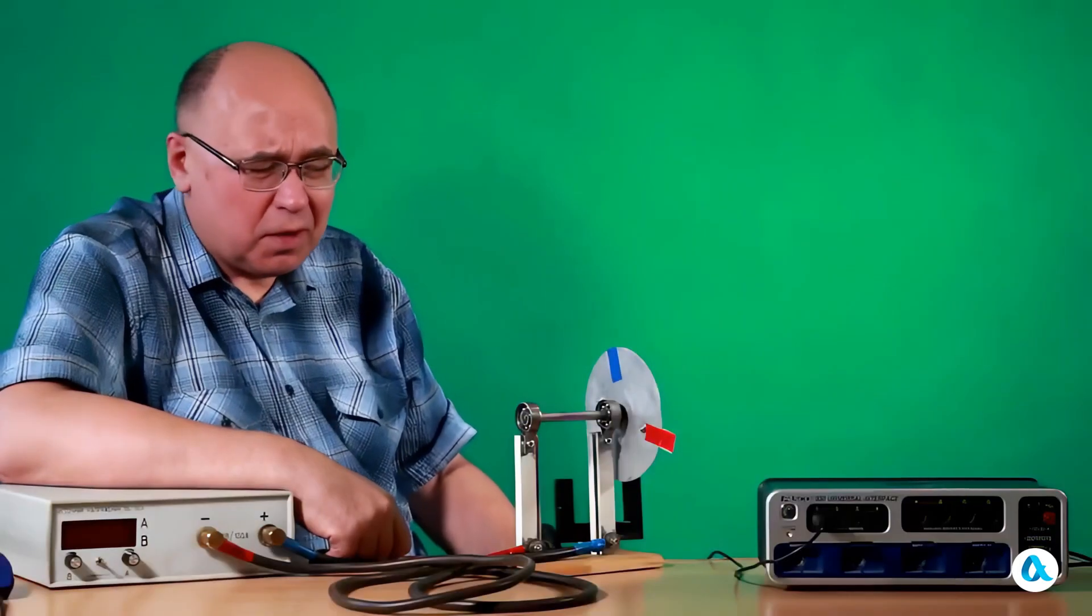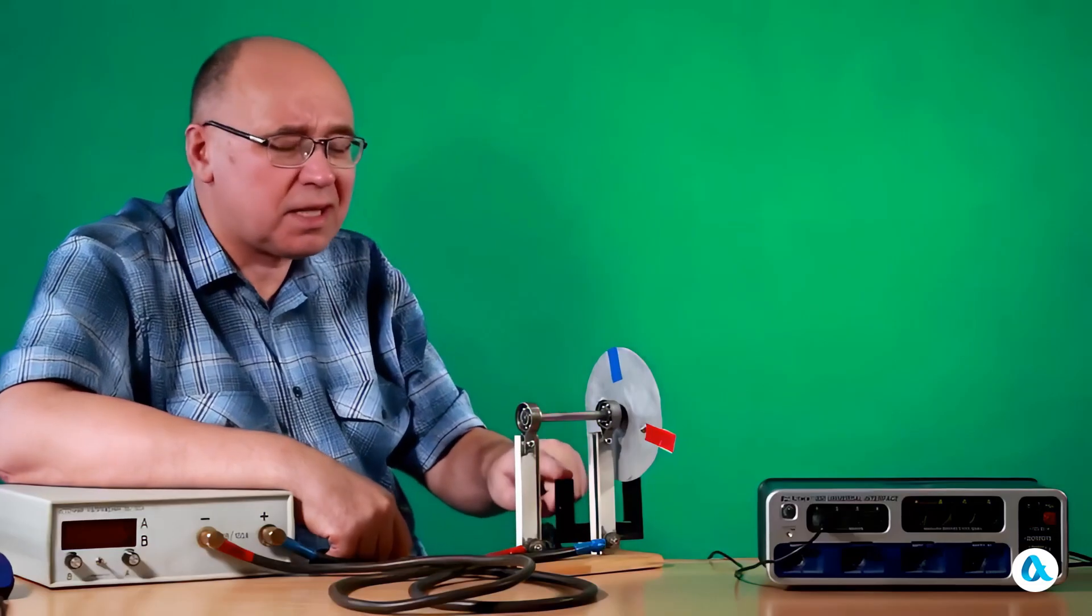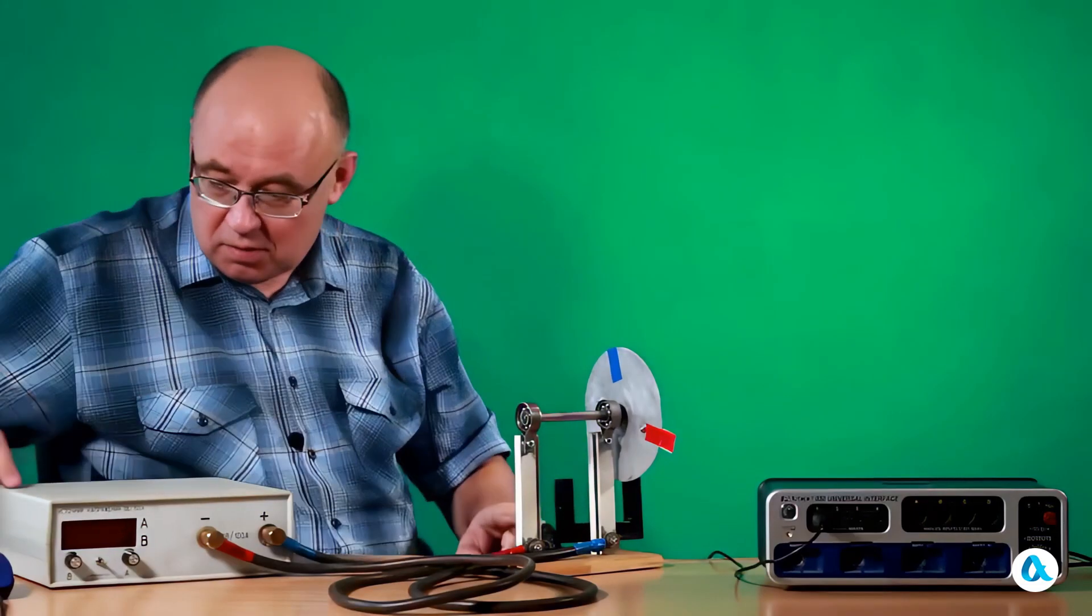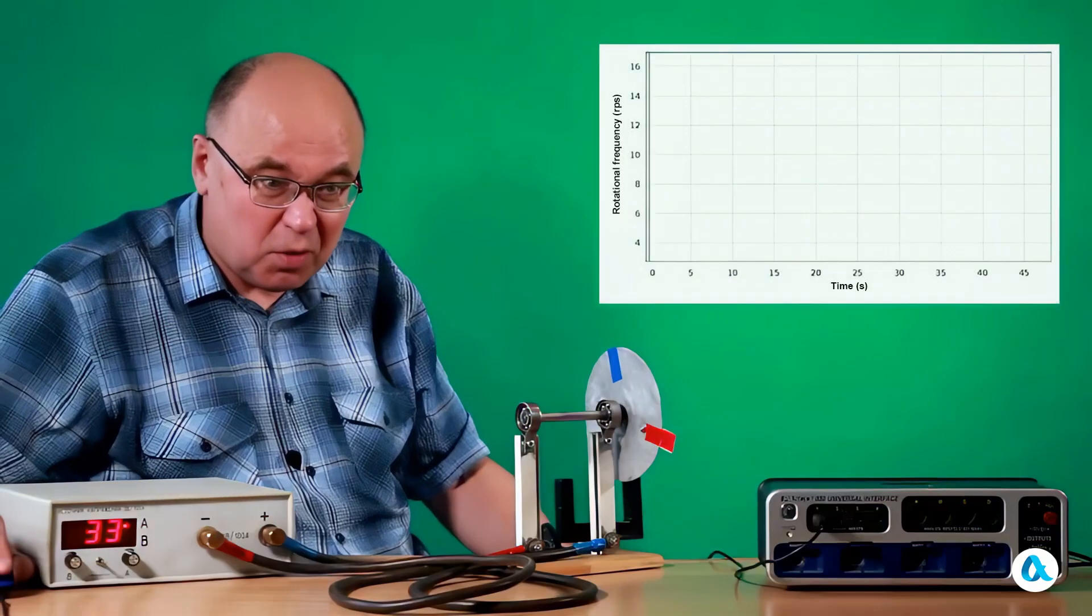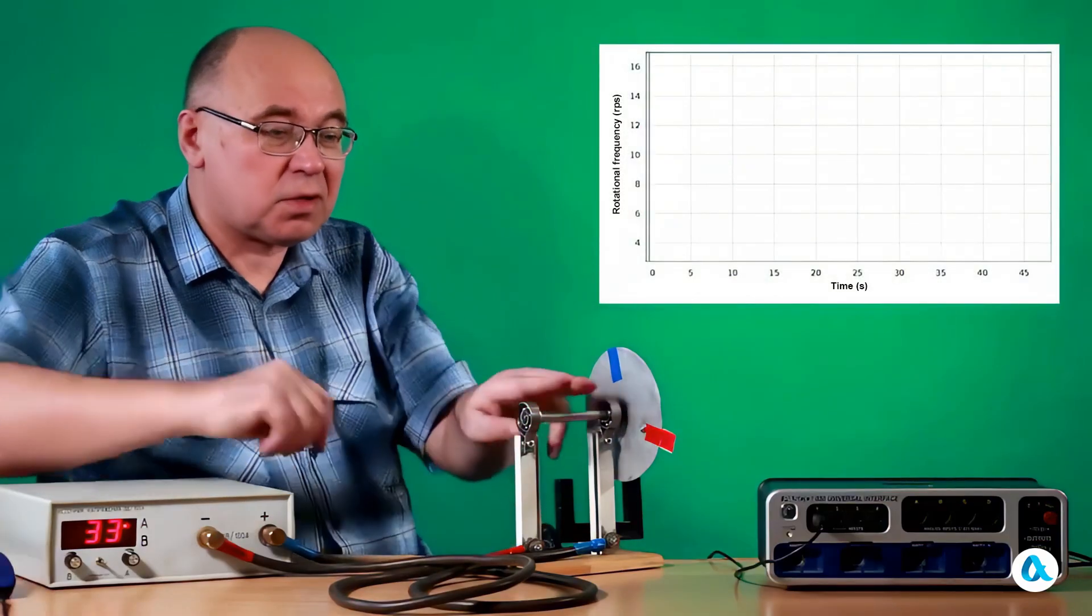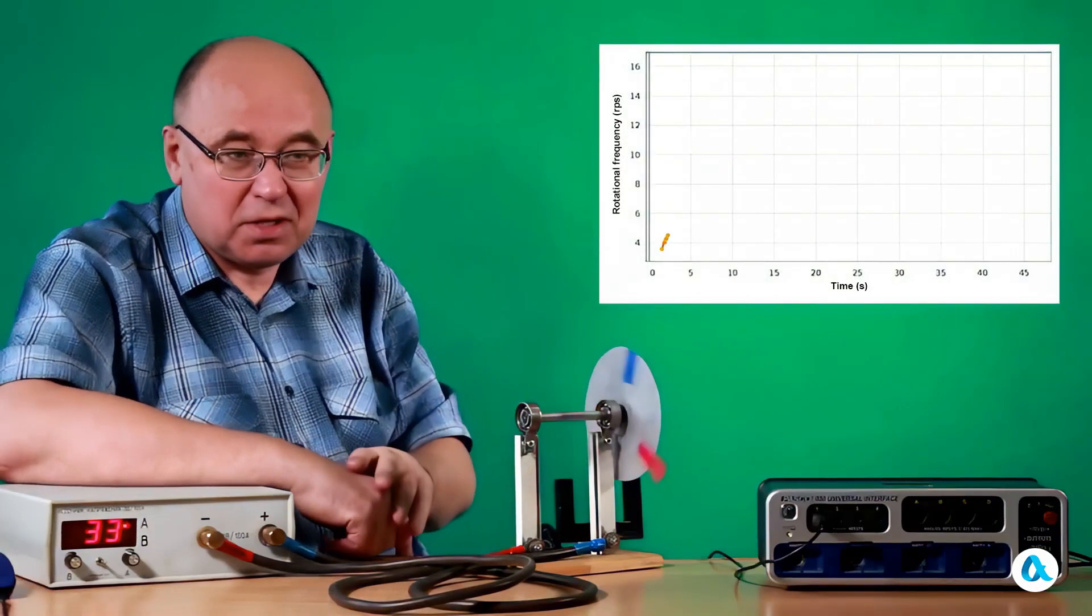And to understand it, let's take a look at how our motor accelerates. To record the characteristics of our motor, we installed a photogate on the same base as the motor. Let's run a current of 30 Amperes through the motor. Let's start the recording. Let's start the motor.